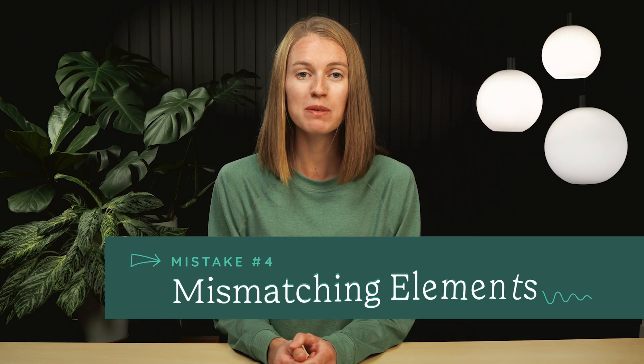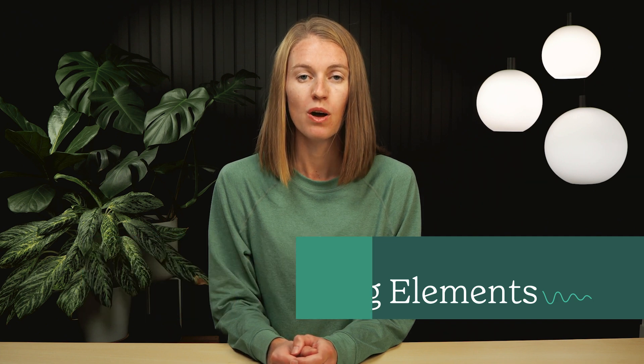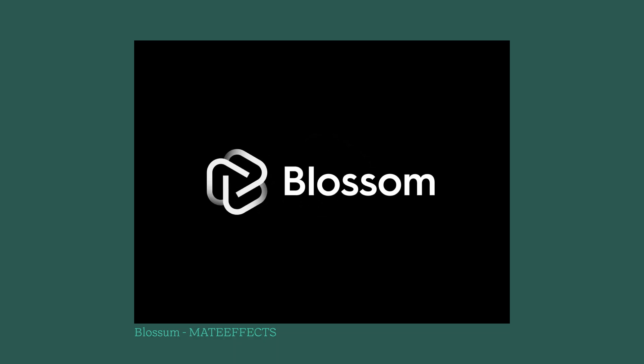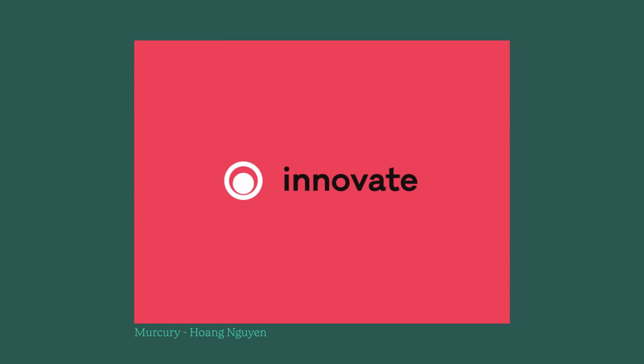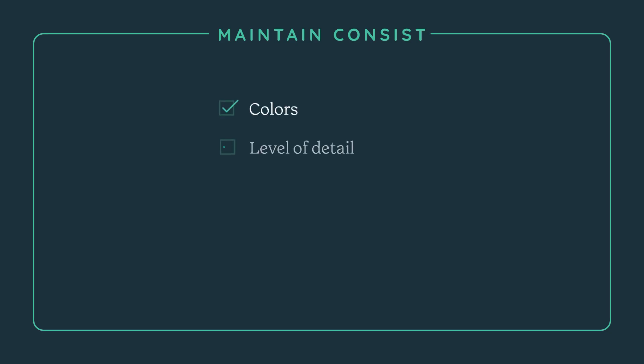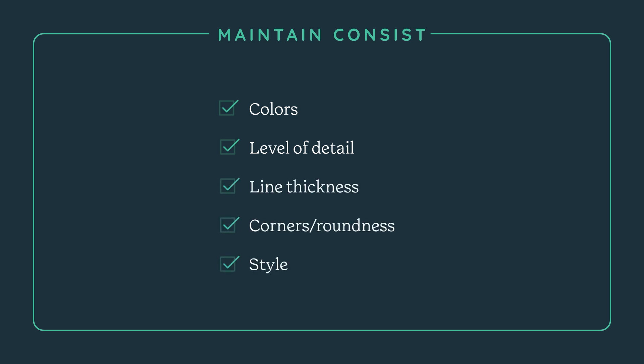Mistake number 4 is using mismatching elements in your logo animation. When animating a logo, you may want to incorporate new elements that are not in the actual logo design. These could be simple things like shapes, lines, or smears, or they could be completely new icons or illustrations. Either way, anything in your logo animation should be on brand. Be sure all colors are within the brand's color palette, the level of detail is consistent including things like line thickness, and that the overall style is consistent. If you didn't design the logo but choose to make your own icons to incorporate into the animation, be extra careful that they match the style of the logo.